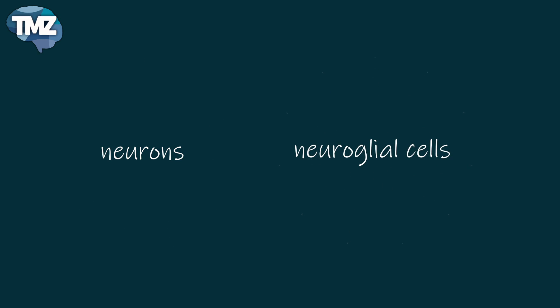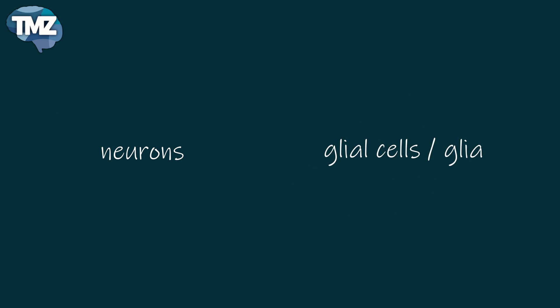This video will cover the basics of the cell types within the brain. The brain basically consists of two categories of specialized cells: neurons and neuroglial cells, usually referred to simply as glial cells or glia, which form the non-neuronal supportive cellular elements.